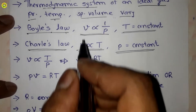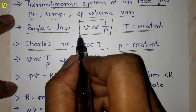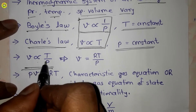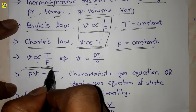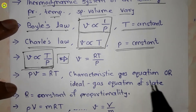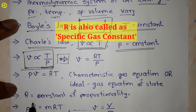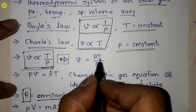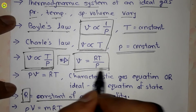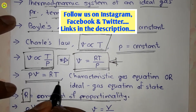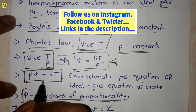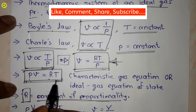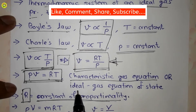When we combine both laws — Boyle's law and Charles' law — we get this equation: specific volume is proportional to absolute temperature upon absolute pressure. Using the constant of proportionality R, we get specific volume equals RT upon P, or equivalently, PV equals RT. This equation PV = RT is called the characteristic gas equation or ideal gas equation of state.